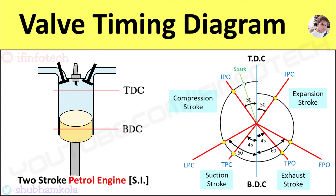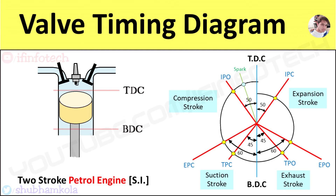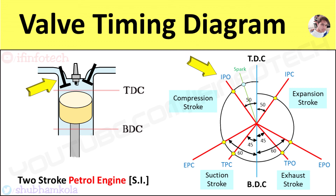This is done to suck fresh air through the transfer port and to exhaust burned gases through the exhaust port. The compression process starts when the piston moves from BDC to TDC. The pressure inside the compression chamber increases due to the start of the compression stroke, and the cycle starts again by opening the inlet port at an angle of 50 degrees before TDC position of the piston.